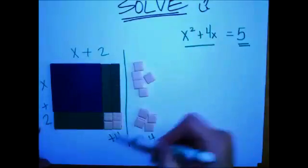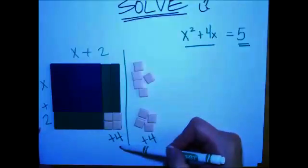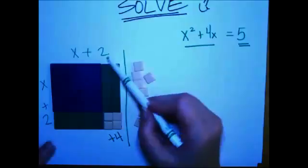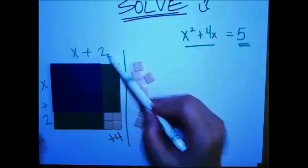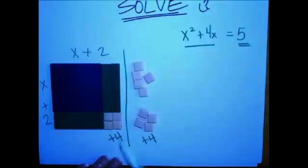So we have a square now that's x plus 2 over here on each side. So how can we always predict how we're going to get this number to complete the square? Well, if we notice, when we split this 4x into two parts, so we have 2 here and 2 here. This 2 times 2 gave us the 4. That 2 times 2 gave us the 4.